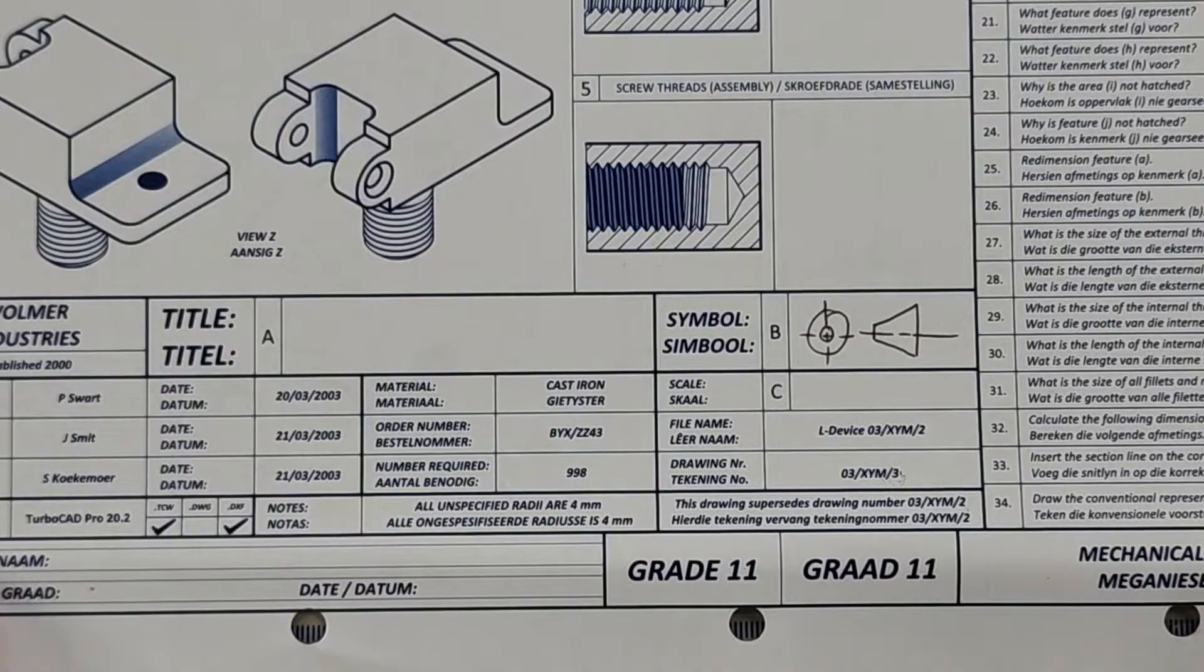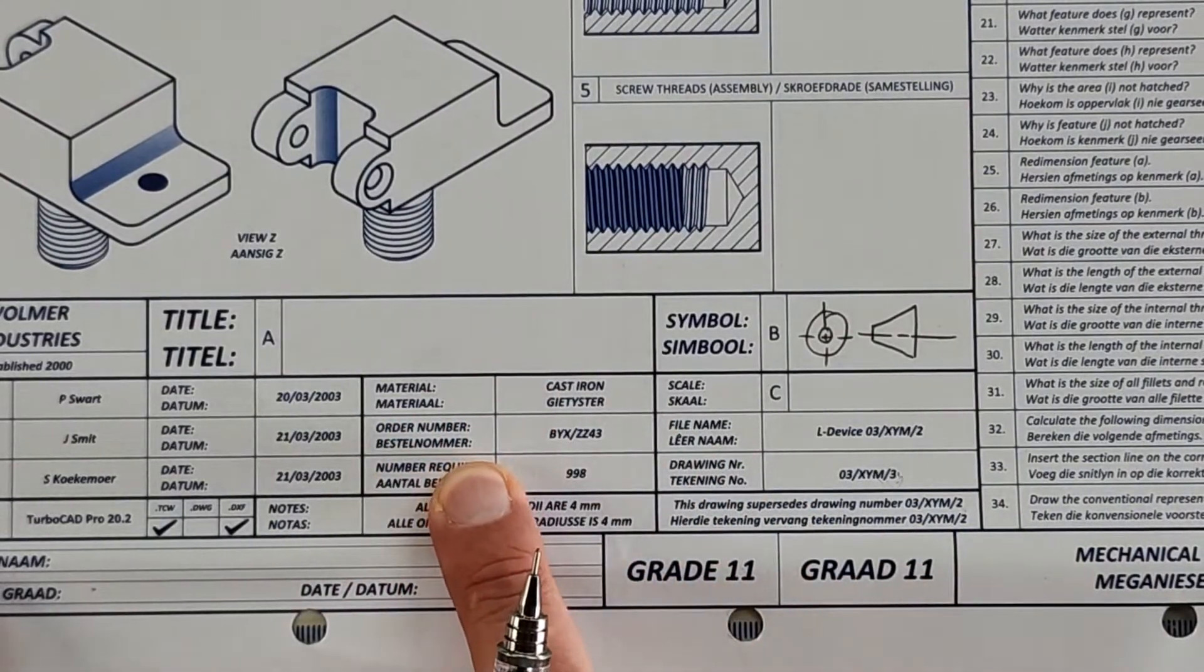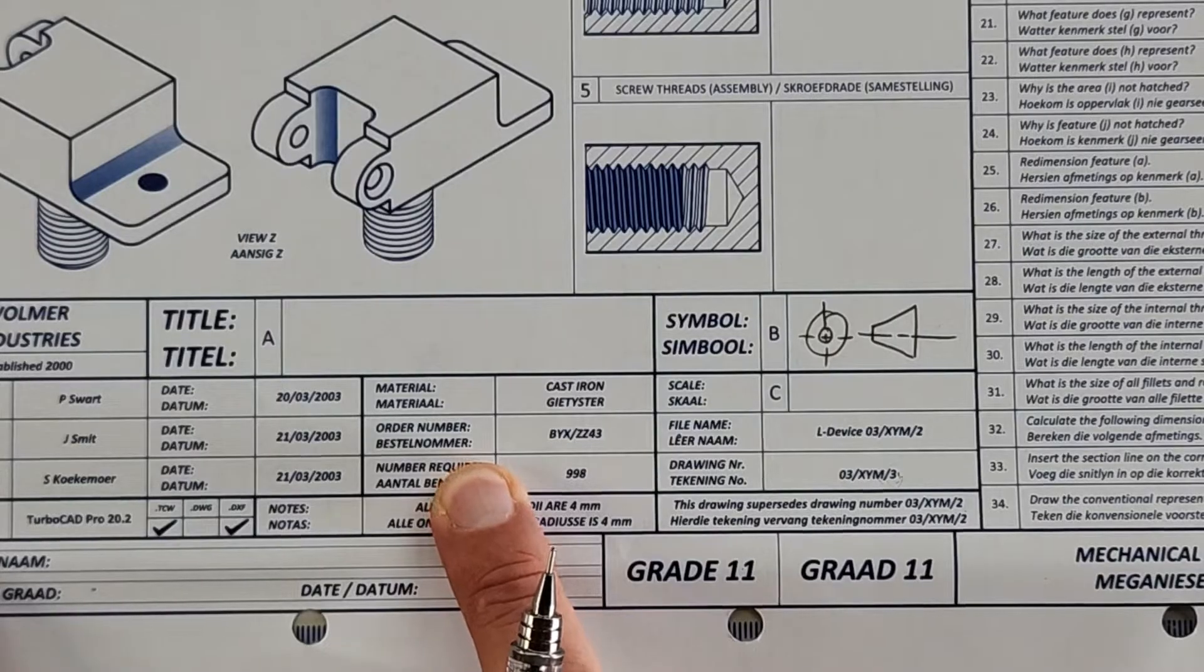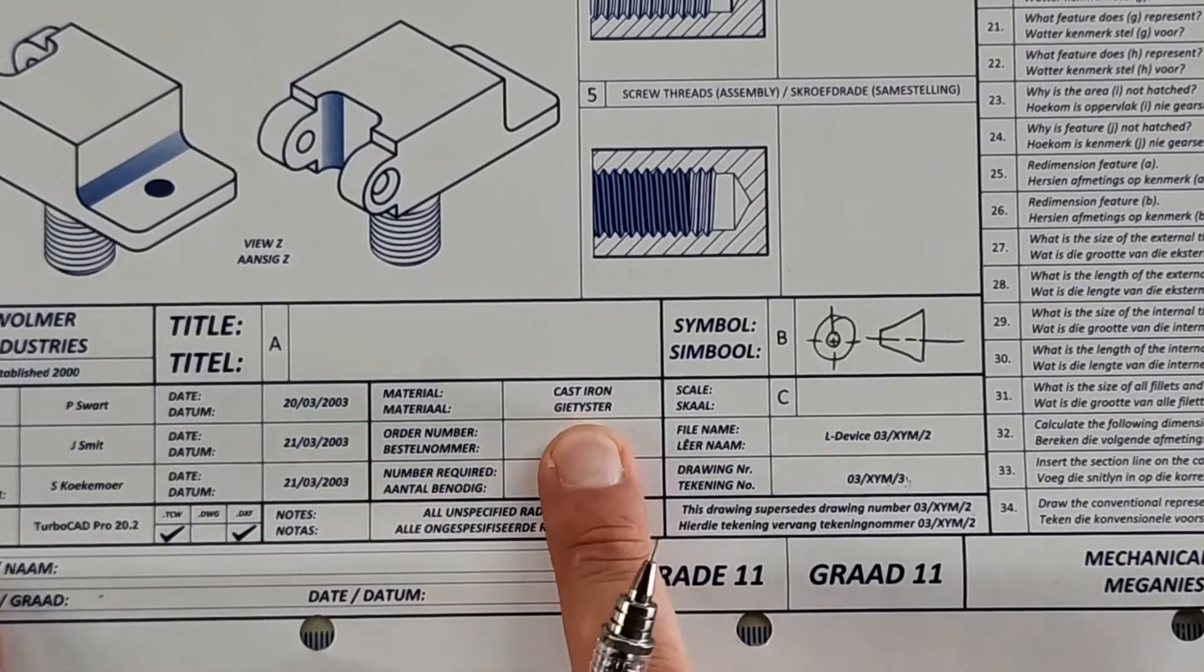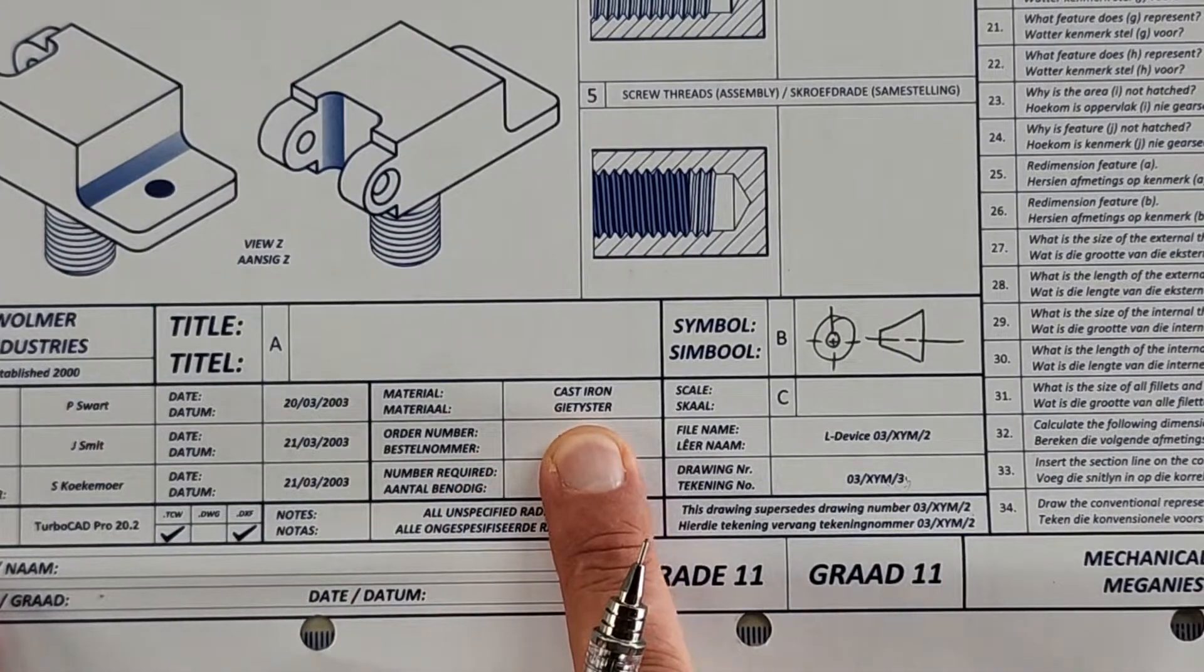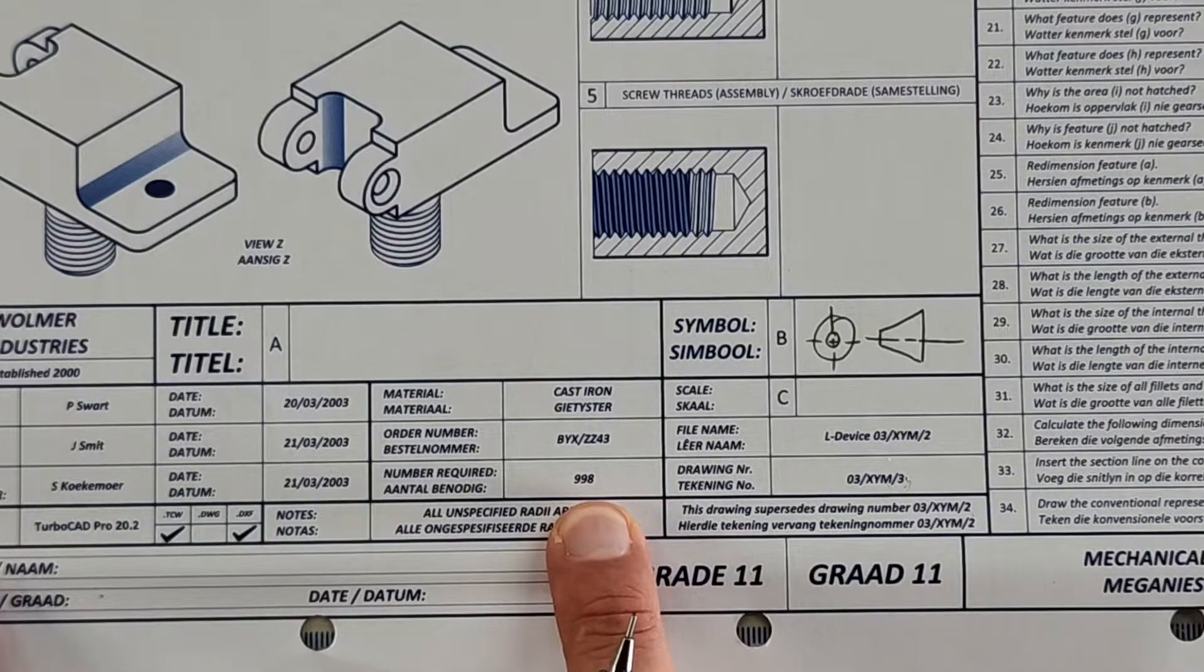What is the order number? We're going to again find that here. Including this drawing, we did that. State the type of material used to manufacture this part. Clear cast iron. How many of these components must be manufactured? 998. Very clear.